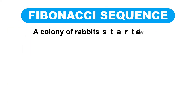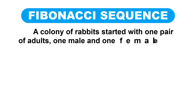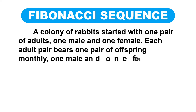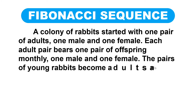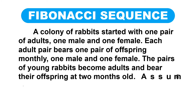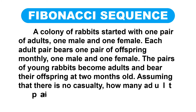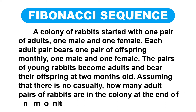This is the problem that gave rise to the Fibonacci Sequence: A colony of rabbits started with one pair of adults — one male and one female. Each adult pair bears one pair of offspring monthly, one male and one female. The pairs of young rabbits become adults and bear their offspring at two months old. Assuming that there is no casualty, how many adult pairs of rabbits are in the colony at the end of N months?